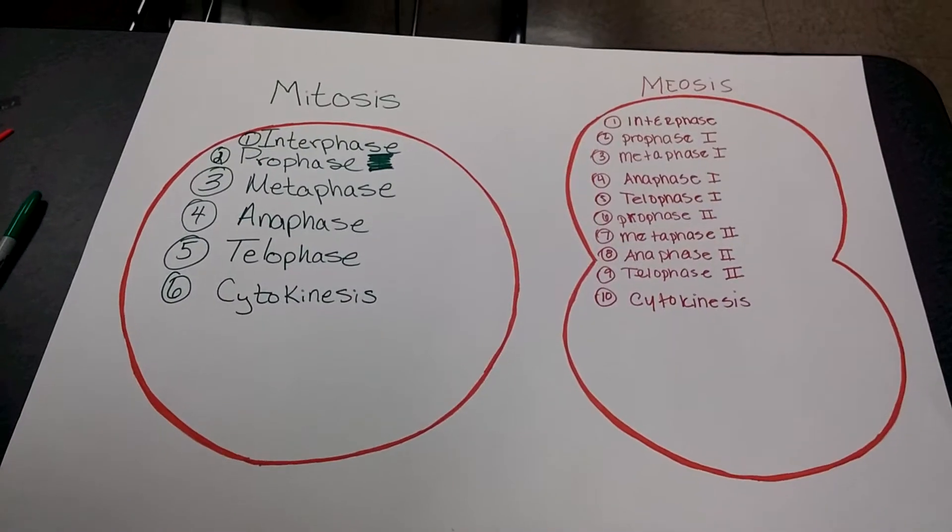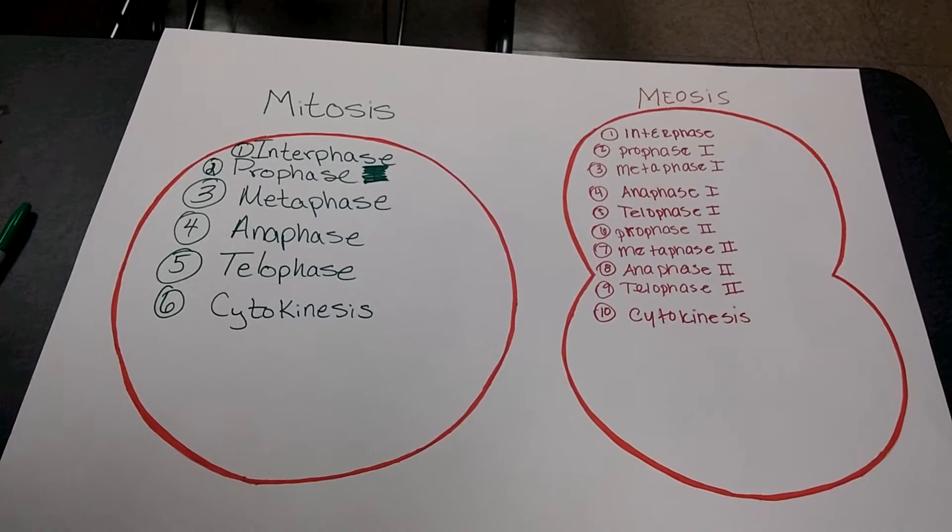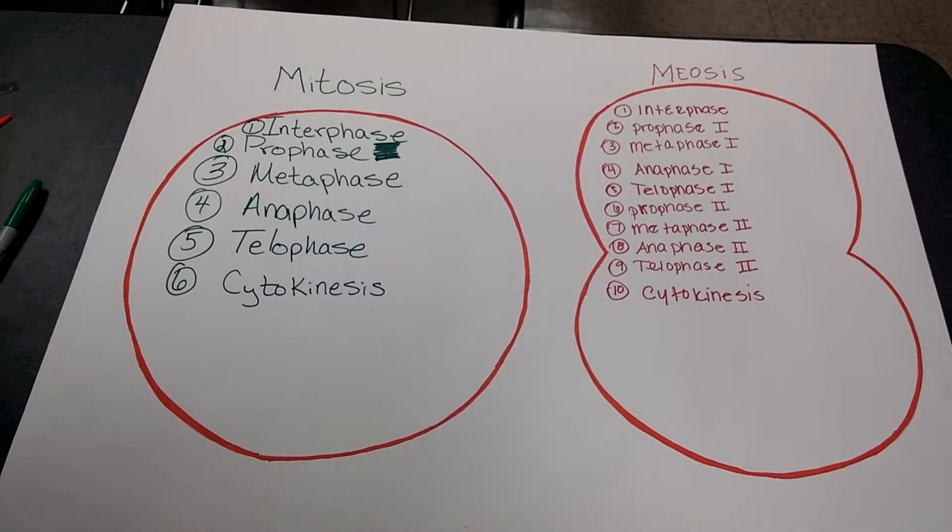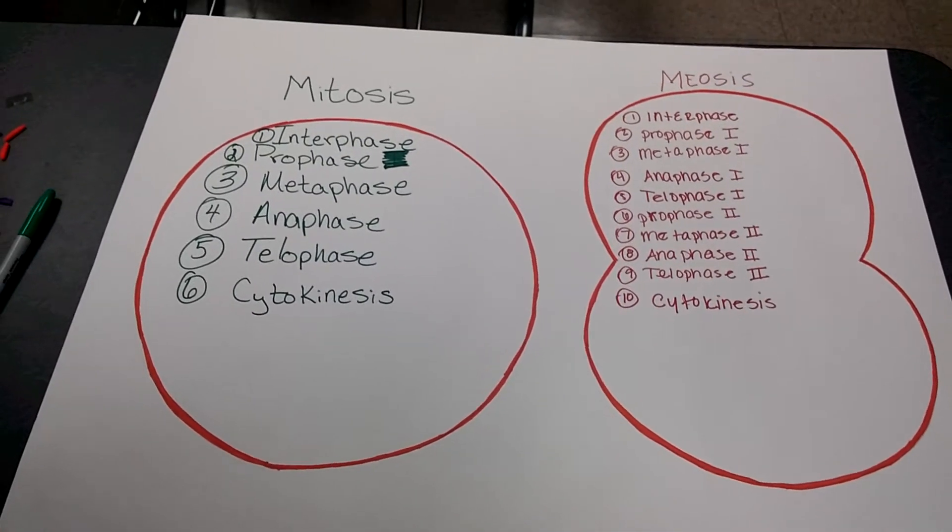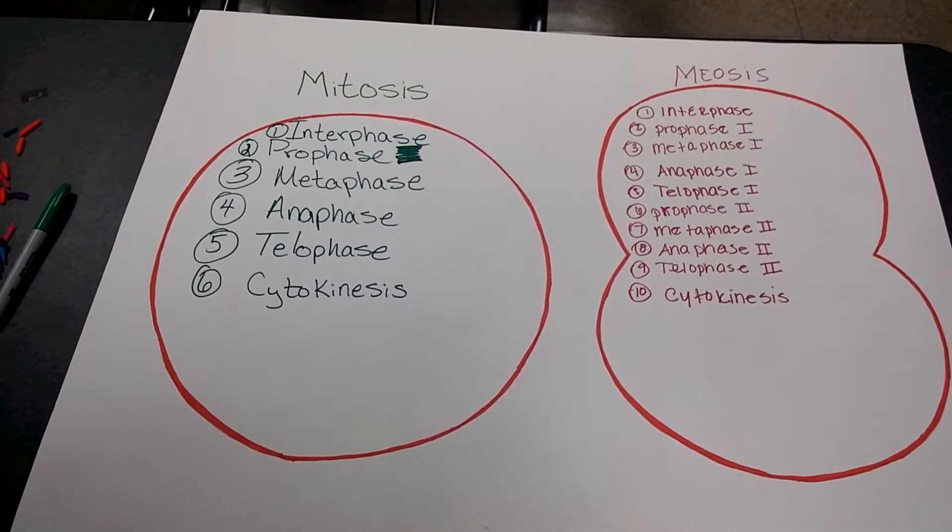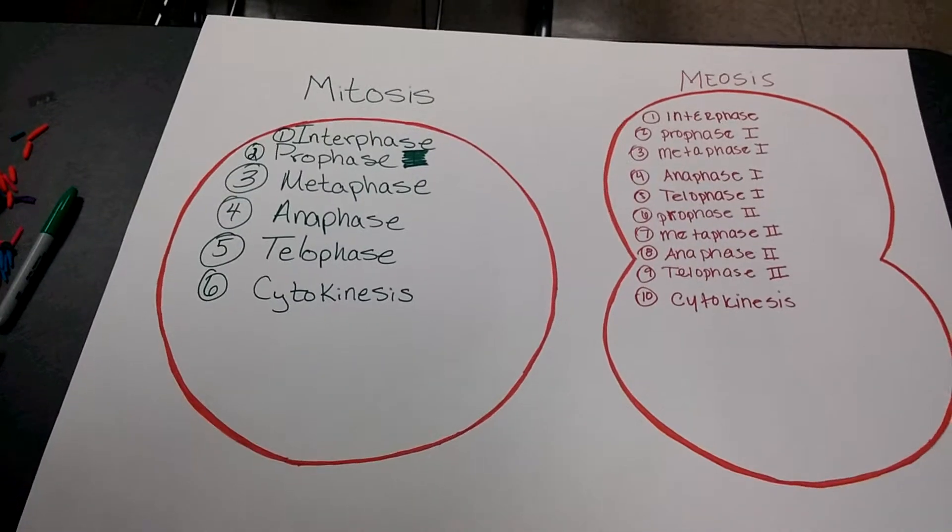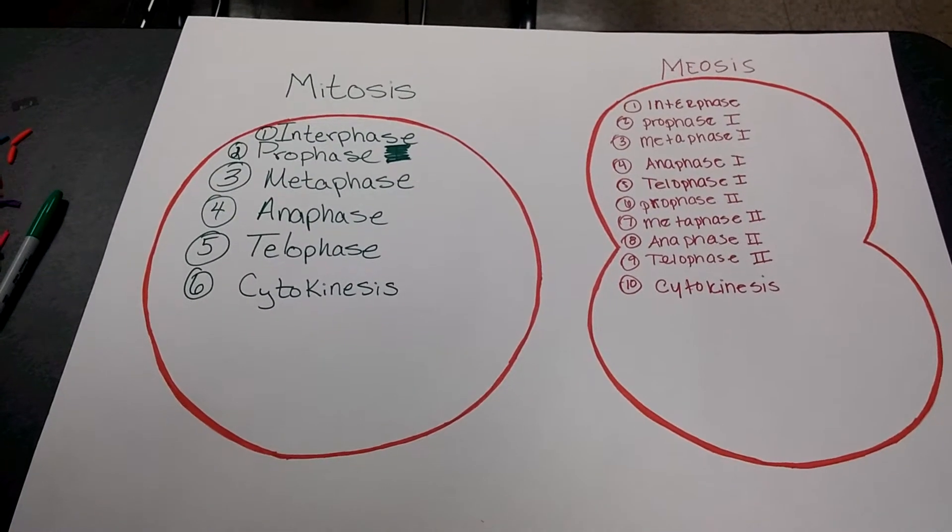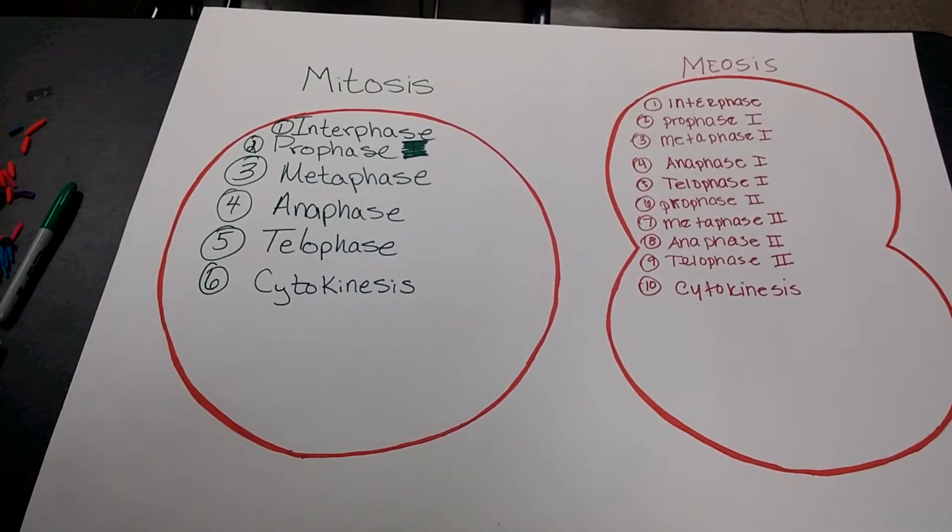The four main cellular differences of meiosis versus mitosis: First is the pairing of homologous cells in meiosis, and this does not happen in mitosis. There are no homologous cells to be paired in mitosis.